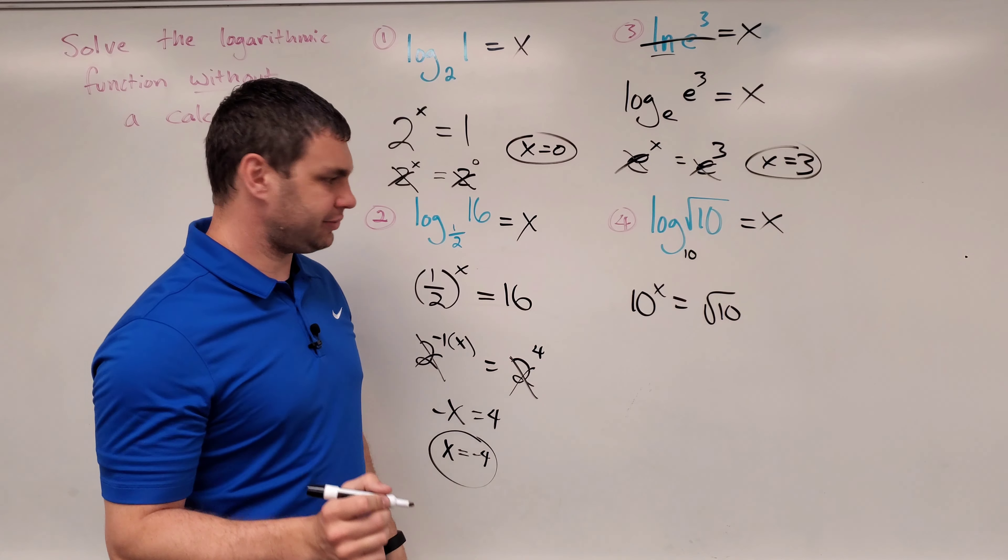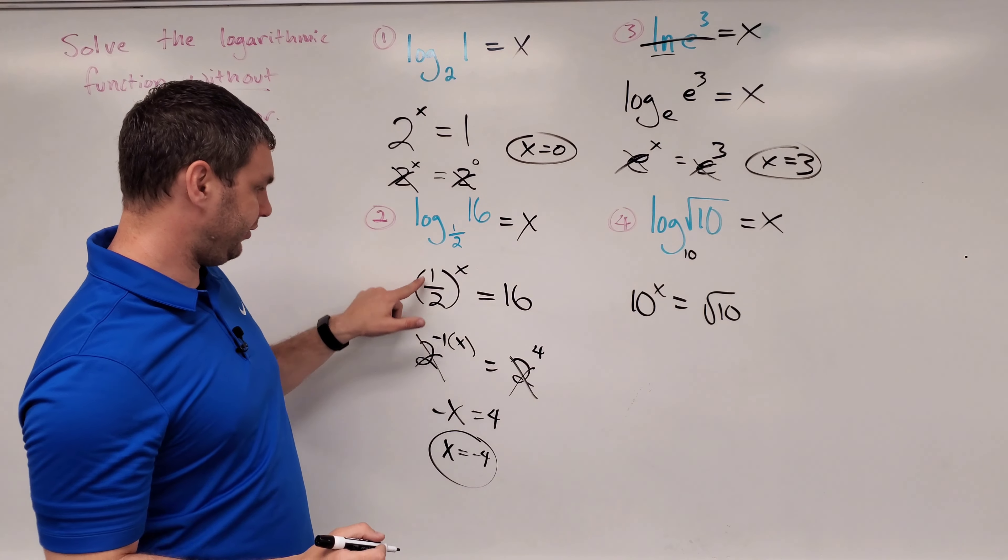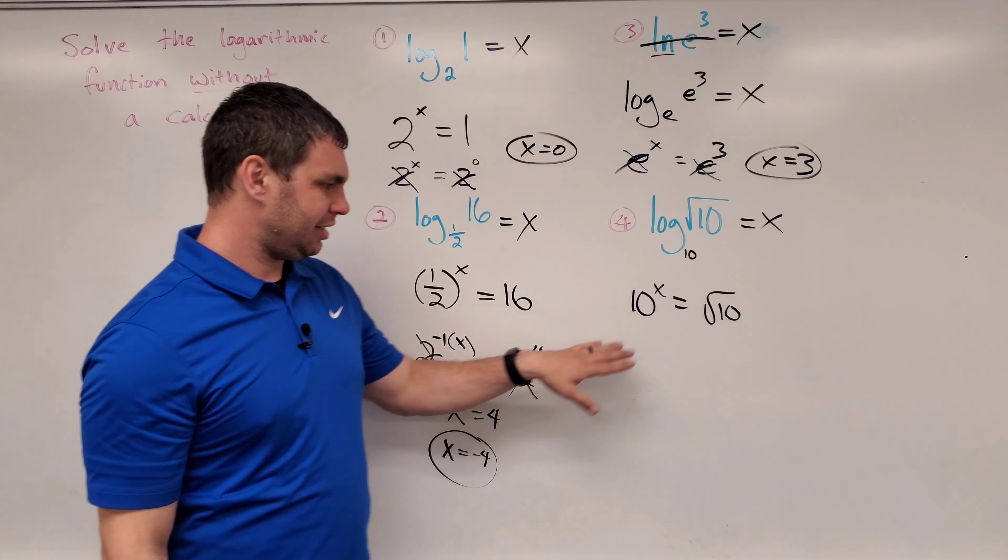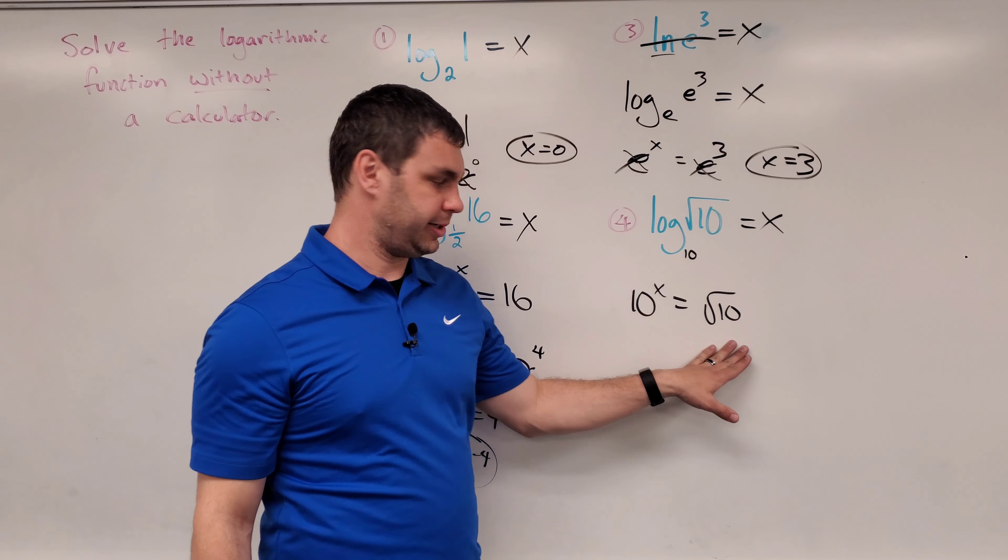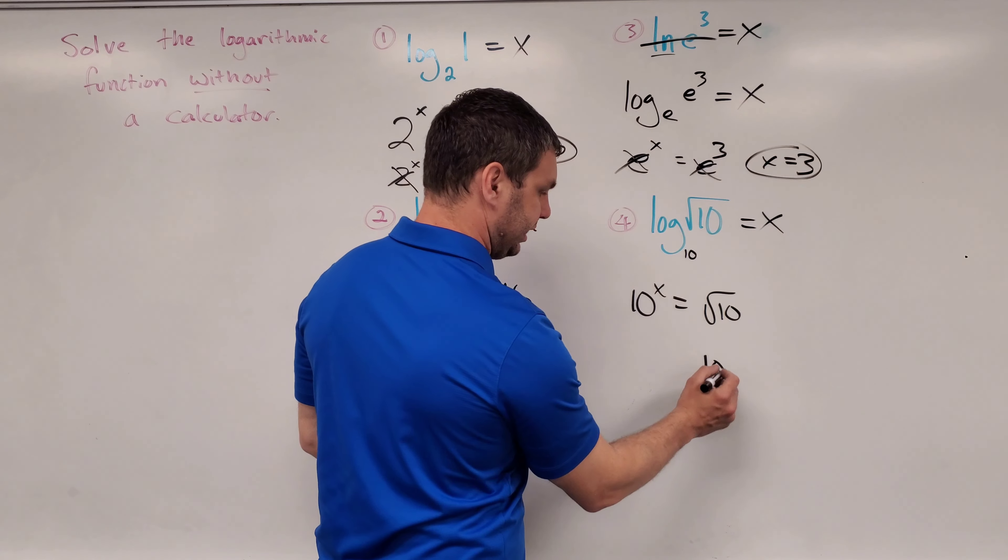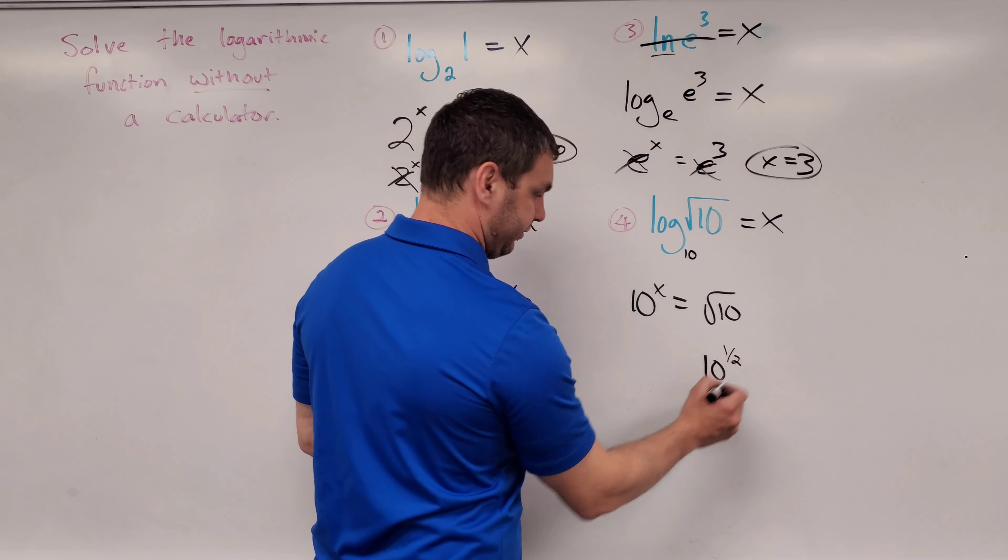And this one's written a little bit differently than these last few, where we were able to get that to be 2 raised to something. We probably are going to use 10 here. However, we have to remember that the square root of 10 can also be written as 10 raised to the one half.